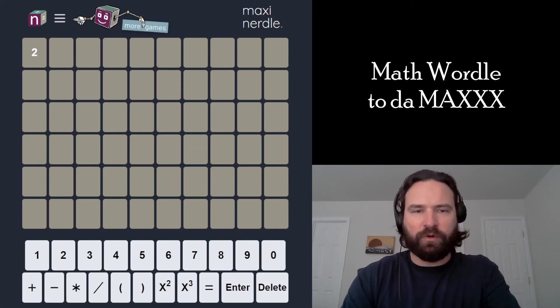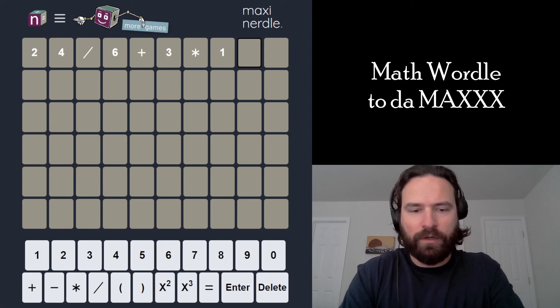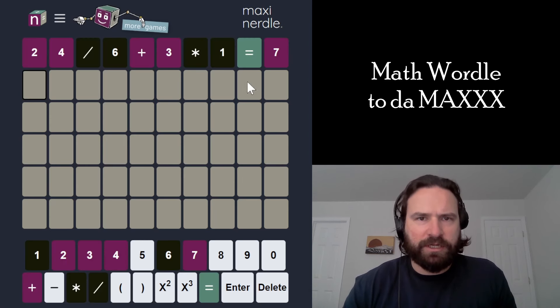All right, let's match the maxi-nurdle. Let's start with 24 divided by 6 plus 3 times 1 equals 7. Okay, just addition, and we have equals a single-digit number.